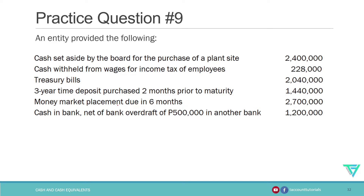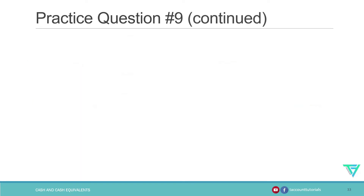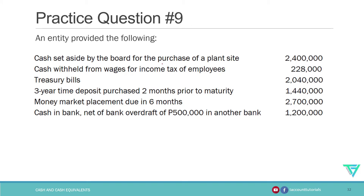Let's have another problem. An entity provided the following items. The requirement is to compute for the cash and cash equivalents. The first item is cash set aside by the board for the purchase of a plant site. It is a cash fund for acquisition of a non-current asset, and this type of fund is classified as a non-current asset or non-current investment, so it's not included in the cash and cash equivalent balance.